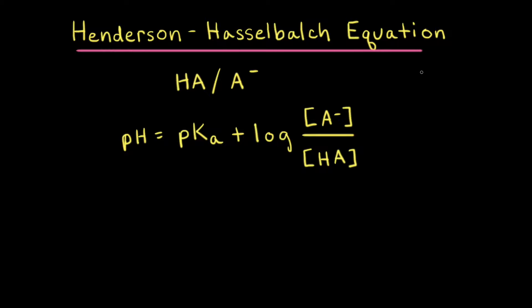The Henderson-Hasselbalch equation is an equation that's often used to calculate the pH of buffer solutions. Buffers consist of a weak acid and its conjugate base. So for a generic weak acid, we could call that HA, and therefore its conjugate base would be A minus. To calculate the pH of the buffer solution, we would find the pKa of the weak acid, and to that we would add the log of the concentration of the conjugate base divided by the concentration of the weak acid.